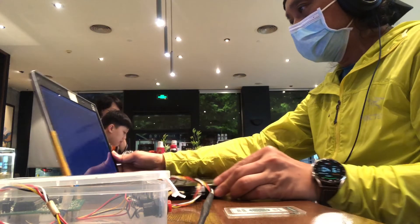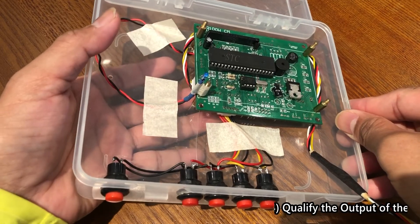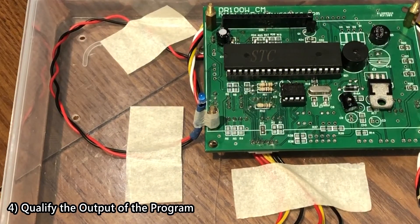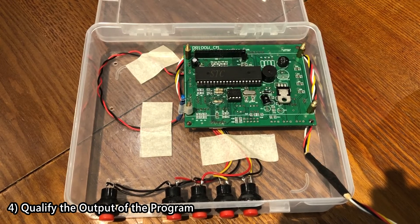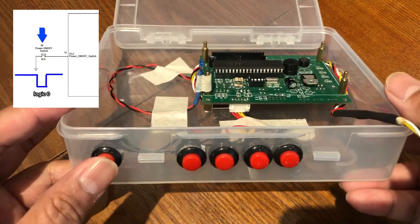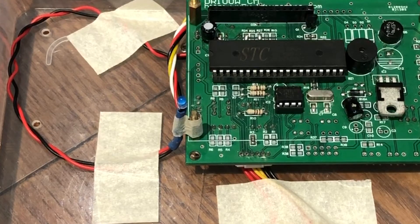Let's run the program and see if the output matches the PDL. Let me power on by pressing the switch at the bottom of the board. Yes — the LED turns on for 2 seconds and then turns off. I'm not going to press the switch right now, just observing. This switch here is the one connected to P3.7. The program is now doing nothing — no display on the LED, no action.